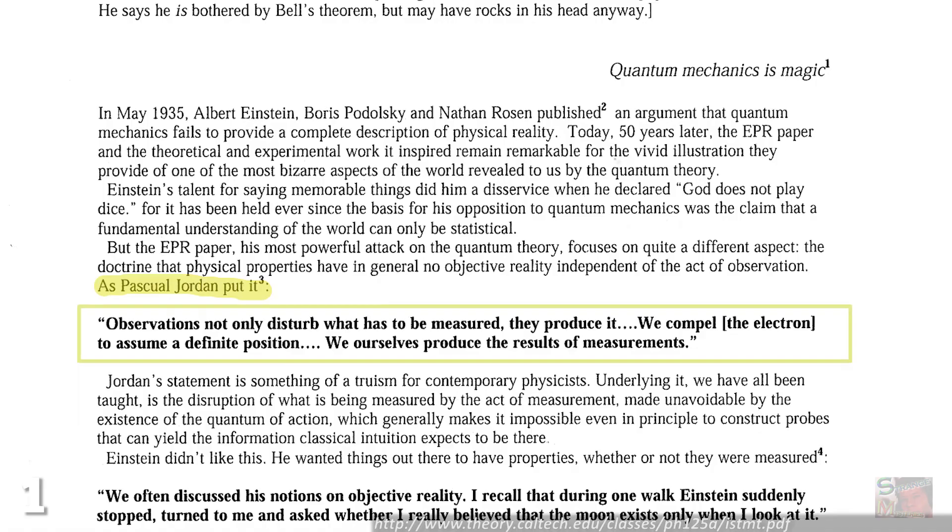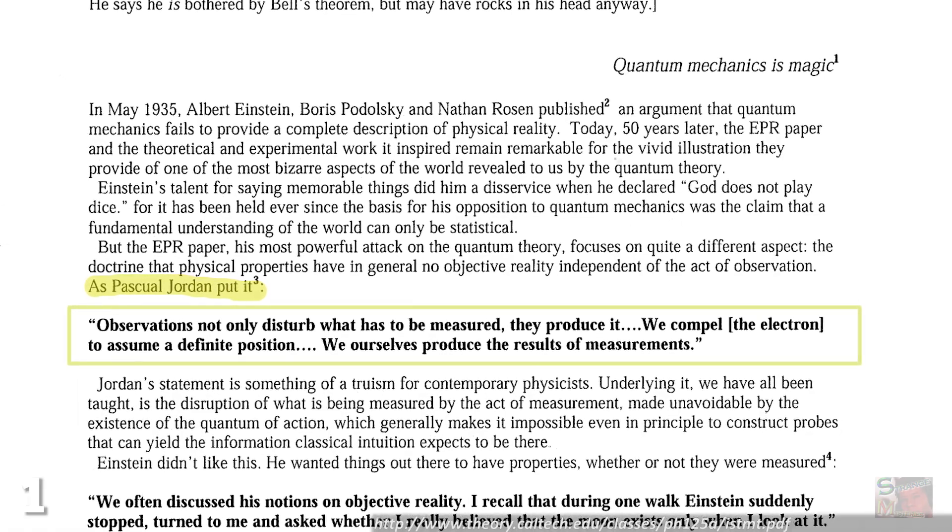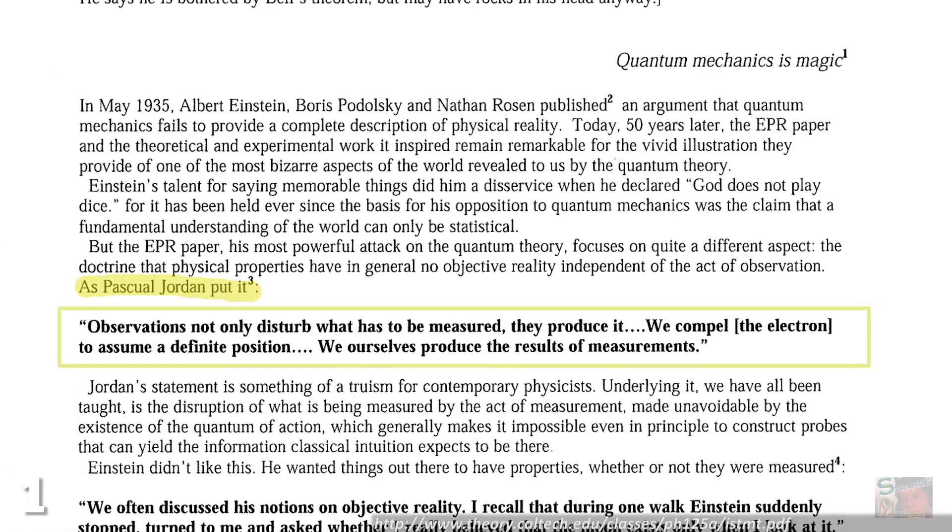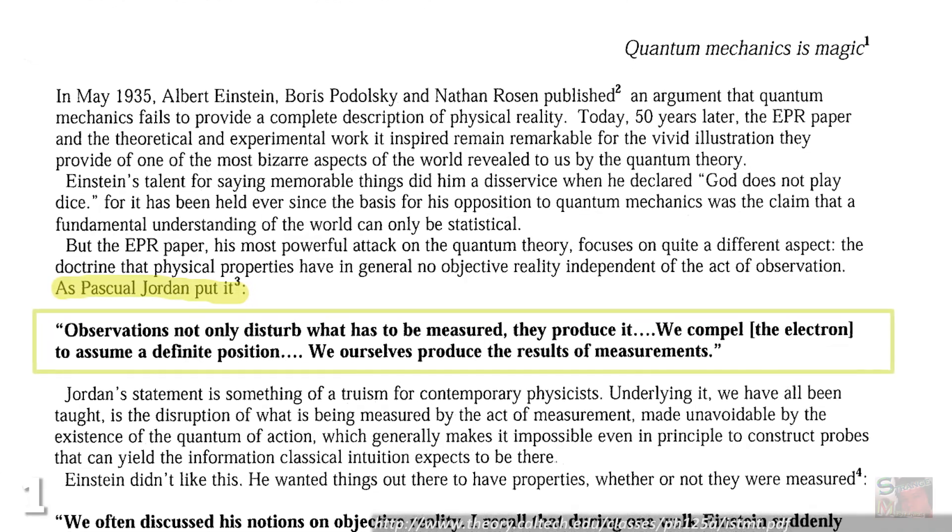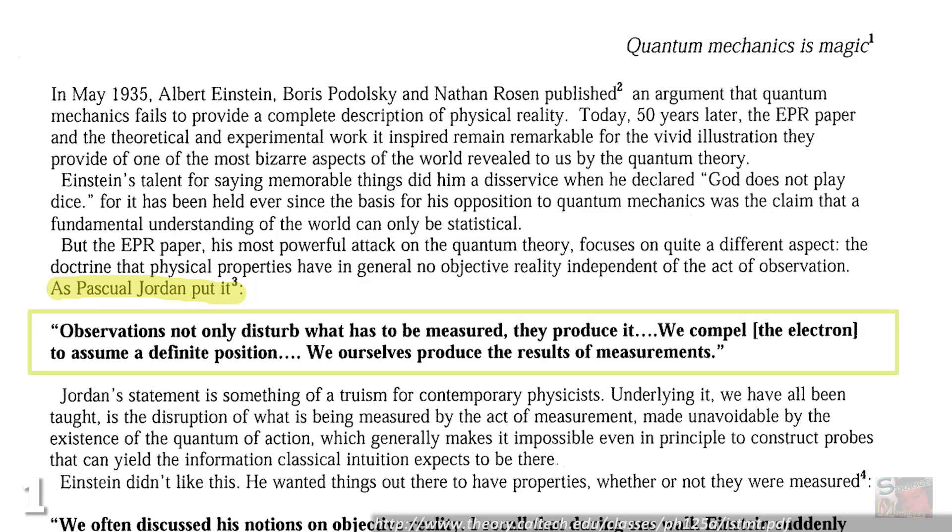In the 1920s, physicist Pasquale Jordan was quoted as saying, 'Observations not only disturb what has to be measured, they produce it. We compel a quantum particle to assume a definite position. We ourselves produce the results of measurements.'